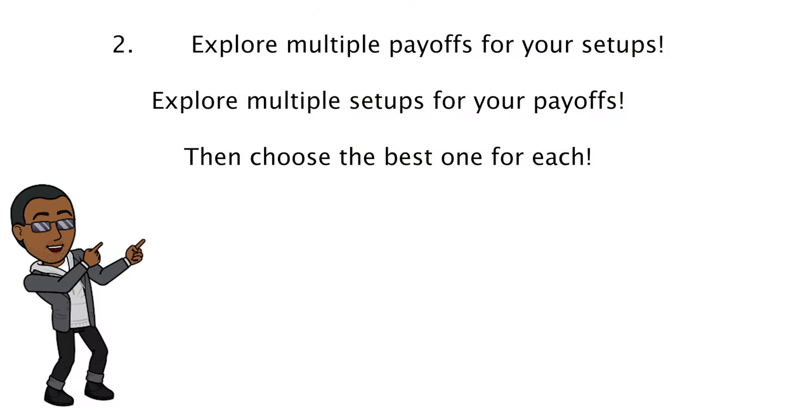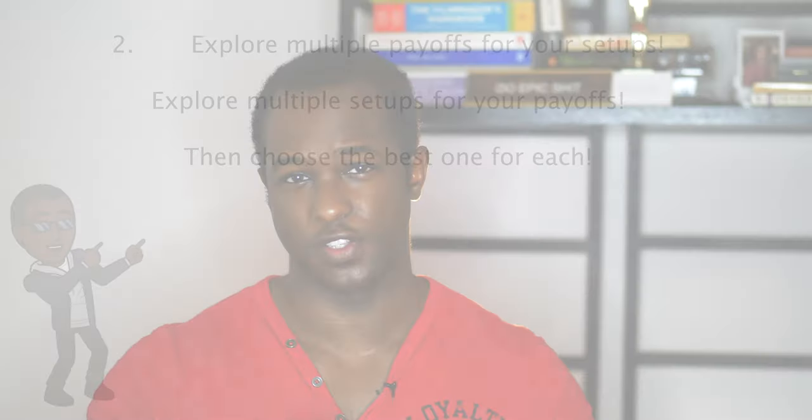Number two: explore multiple payoffs for your setups and explore multiple setups for your payoffs — then decide which is the best one for each. We initiate setups and payoffs automatically because our brains are so used to seeing how they work in film that we implement them on autopilot. But after you've written a draft, please explore multiple payoffs for your setups and vice versa. As you're writing the payoff, are you surprised by it? Does it make you feel fulfilled? That's a good indication you're on the right track. Did you plant enough seeds for your payoff? Just a few questions to consider.